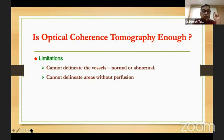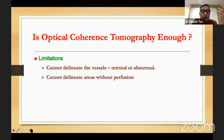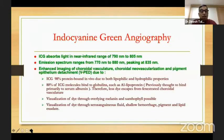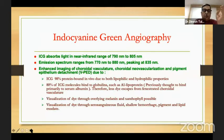What about OCT? Well, OCT cannot delineate the vessels — normal or abnormal — and it cannot delineate flow. It cannot delineate areas without perfusion, and it cannot delineate any leaking areas. So what does ICG do which these two can't?